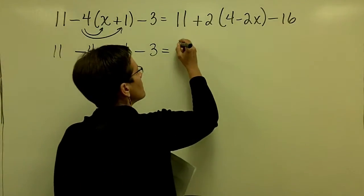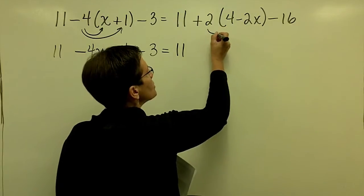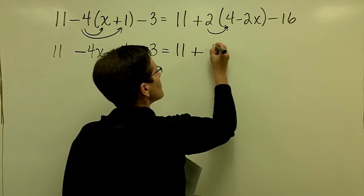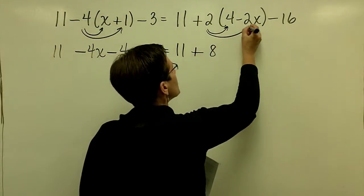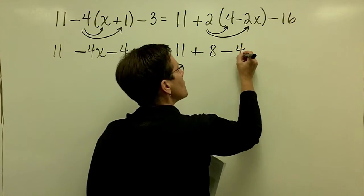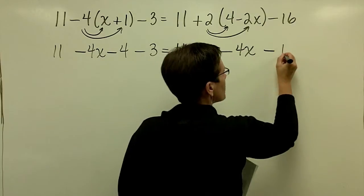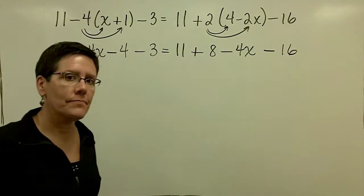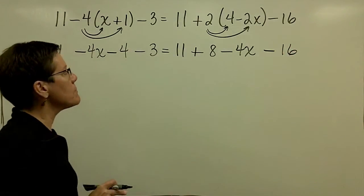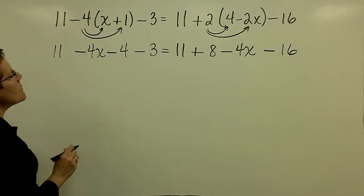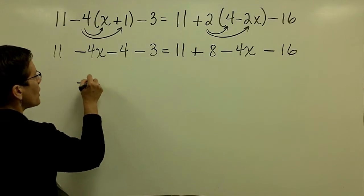So there's the left-hand side, and we'll collect our like terms in a minute. Let's bring down this 11, and then we're going to take a positive 2 times a positive 4 and get a positive 8 here, and 2 times a minus 2 is a minus 4x. That's done. That 16 is just a lone constant. It's not got the parentheses around it.